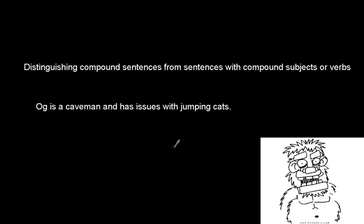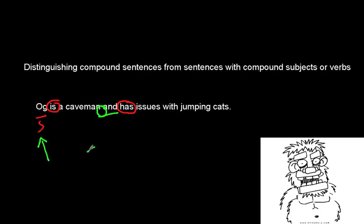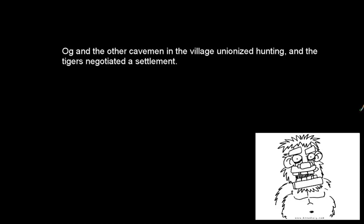Often students have trouble distinguishing compound sentences from sentences with compound subjects or verbs. Consider: 'Og is a caveman and has issues with jumping cats.' We see the subject 'Og,' then two verbs 'is' and 'has,' and an 'and.' But there's no comma in front of the 'and,' and we only have one subject. So this is a compound verb — making it a simple sentence. There isn't another subject to go with that second verb.